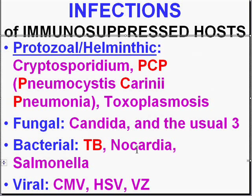With bacteria, anything is possible, but TB — which we once thought we had on the run — is still very common in immunosuppressed and AIDS patients. Organisms like Nocardia, which are halfway between fungi and bacteria, and Salmonella, a common enteric pathogen, are much more likely to cause damage in immunosuppressed persons. The herpes virus family — CMV, herpes simplex, and varicella zoster — is also very likely to cause significant damage in immunosuppressed patients relative to healthy individuals.